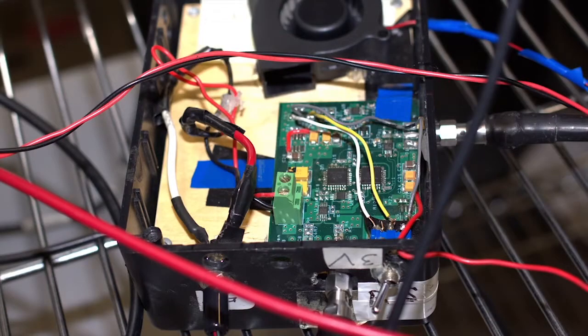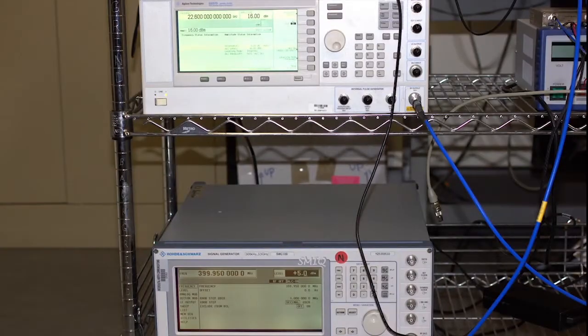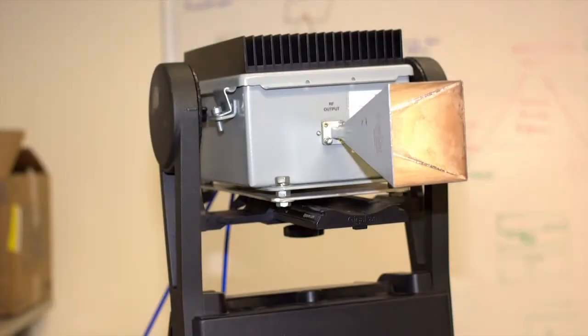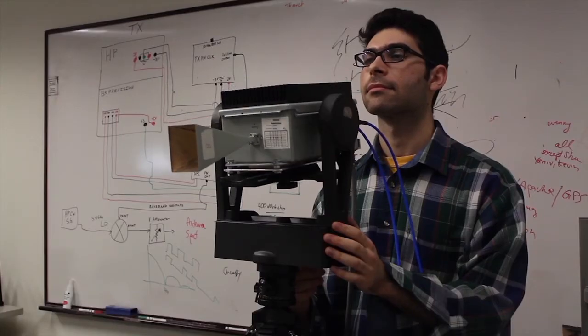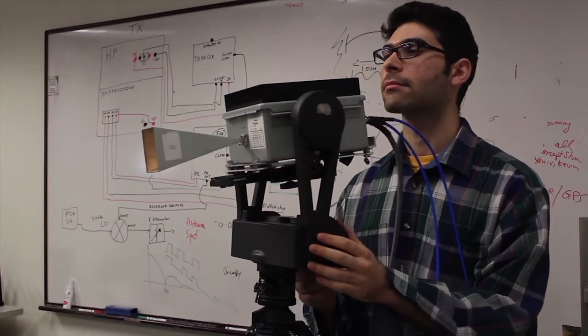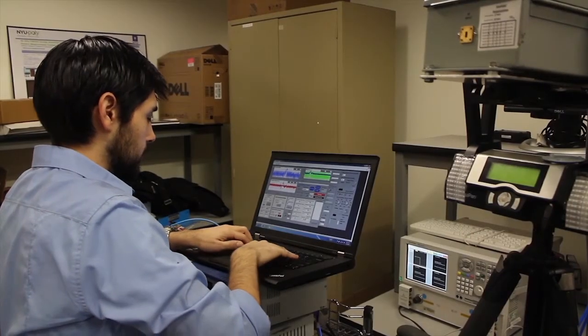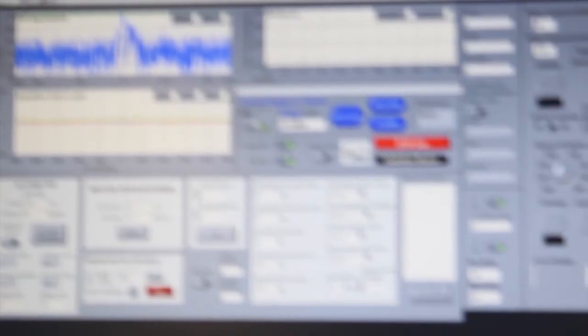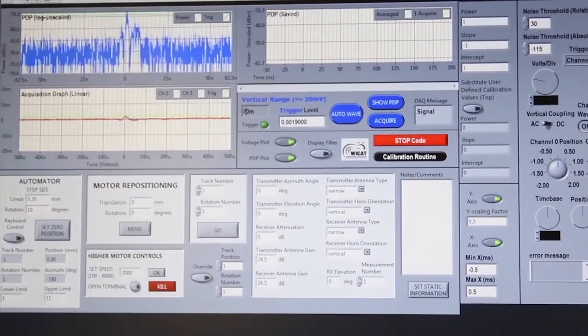Our measurement equipment is a custom-built channel sounder that uses a sliding correlator method. It has a dynamic range of almost 180 decibels, and we calibrated the system twice a day. We use highly directional antennas which broadcast and receive radio waves in very specific directions, and we automatically rotate these antennas 360 degrees using a robotic system. This equipment allows us to measure and resolve incoming radio waves with a spatial resolution of 10 degrees and a time resolution of about 2.5 nanoseconds. In other words, we can identify and record very accurately where and when the radio waves are arriving.